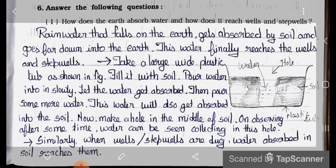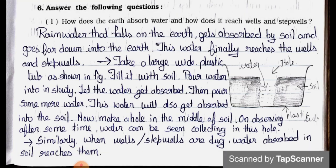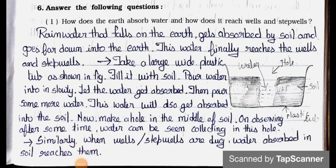Question number 1: How does the earth absorb water and how does it reach wells and step wells? Answer: Rainwater that falls on the earth gets absorbed by soil and goes far down into the earth. This water finally reaches the wells and step wells.